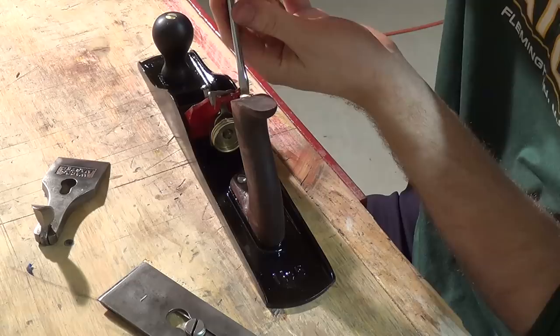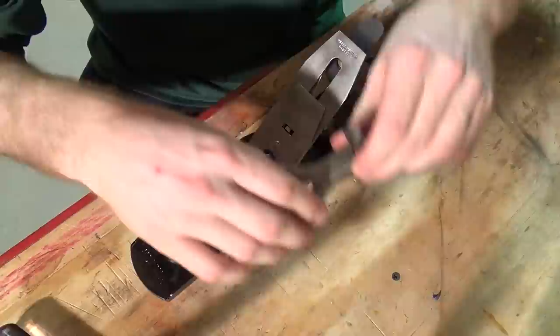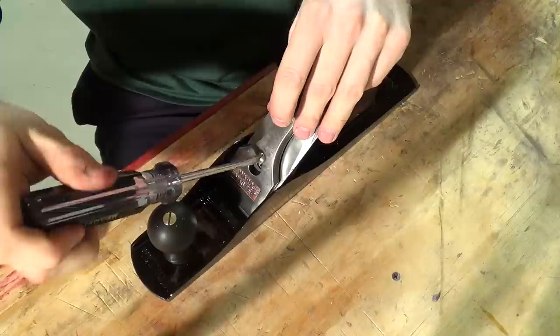Next, I set the blade and the cap iron assembly back down into the plane. It's important to be careful with the blade now because it's so sharp. I worked really hard to make the blade as sharp as it is, and it's not worth it at this point to risk dulling it by setting it back into place carelessly. Now all that's left to do is to put the lever cap back in place and adjust the lever cap screw, just so that there's the right tension with the lever.